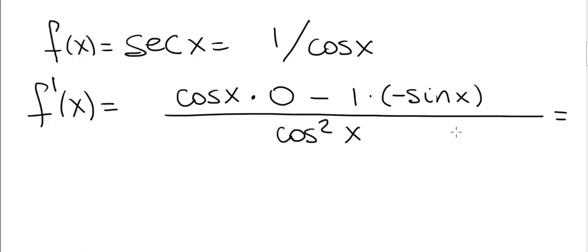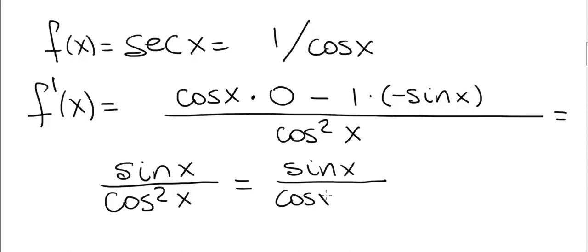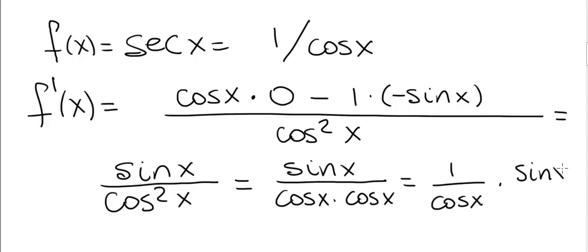Now let's simplify this. Cosine of x times 0 is 0, and minus and minus is plus, so this is sine of x divided by cosine squared x. Let's write it as sine of x divided by cosine x times cosine x, and this is 1 divided by cosine x times sine x divided by cosine x.